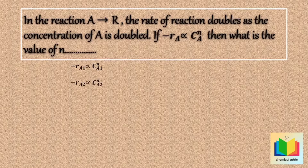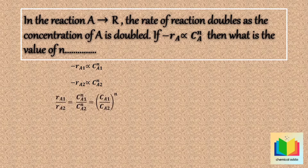Given: if we divide the first condition rate by the second condition rate, we get rA1 divided by rA2, which is equal to cA1 raised to n divided by cA2 raised to n, which can be written as cA1 divided by cA2, whole raised to n.